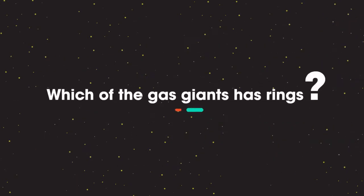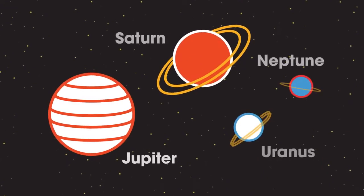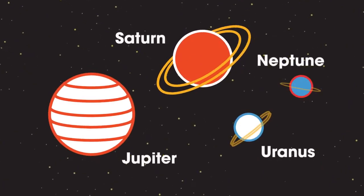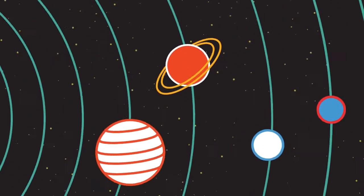Which of the gas giants has rings? Pause the video while you think of an answer. The answer is that all four of them have rings, but only those of Saturn are visible from the Earth.